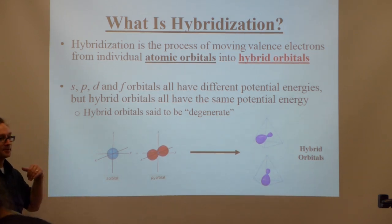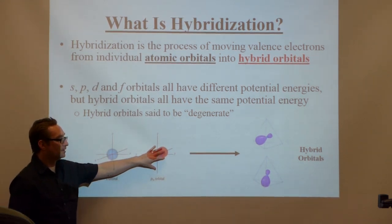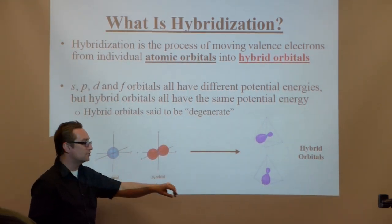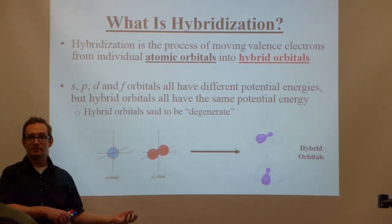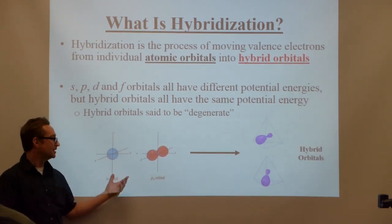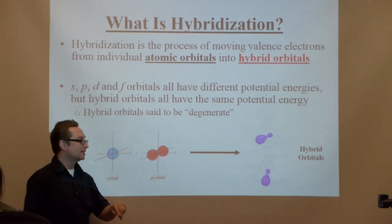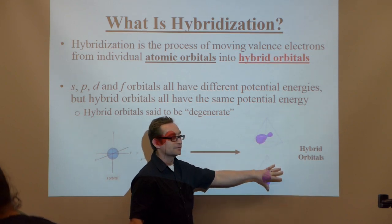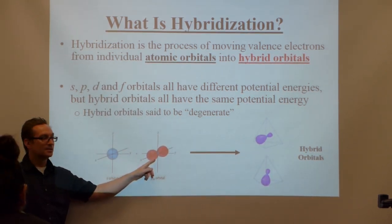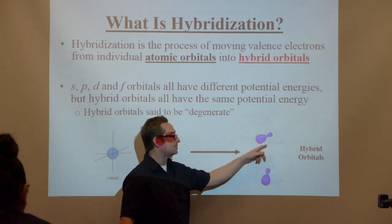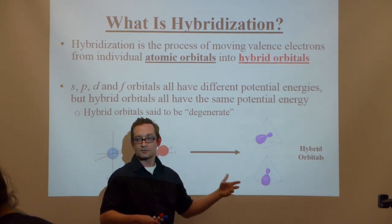Because of this, the hybrid orbitals are said to be degenerate — meaning two orbitals with the same exact energy. So if I made a hybrid orbital out of an S and a P, I can get two hybrid orbitals out. However many atomic orbitals I use to make hybrids, I get that many hybrid orbitals back. The P and S are different orbitals, but when they become hybrids, they become the same.